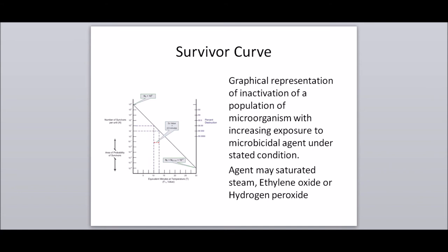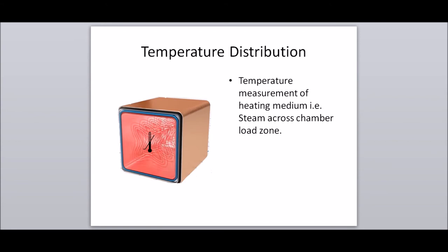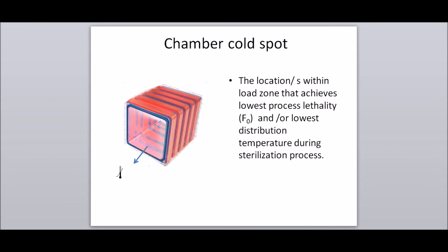The agent used may be saturated steam, ethylene oxide, or hydrogen peroxide. Temperature distribution: the measurement of the heating medium — i.e., steam — across a chamber load zone. Chamber cold spot: the location within the load zone that achieves the lowest process lethality, i.e., F0, and/or lowest distribution temperature during the sterilization process.